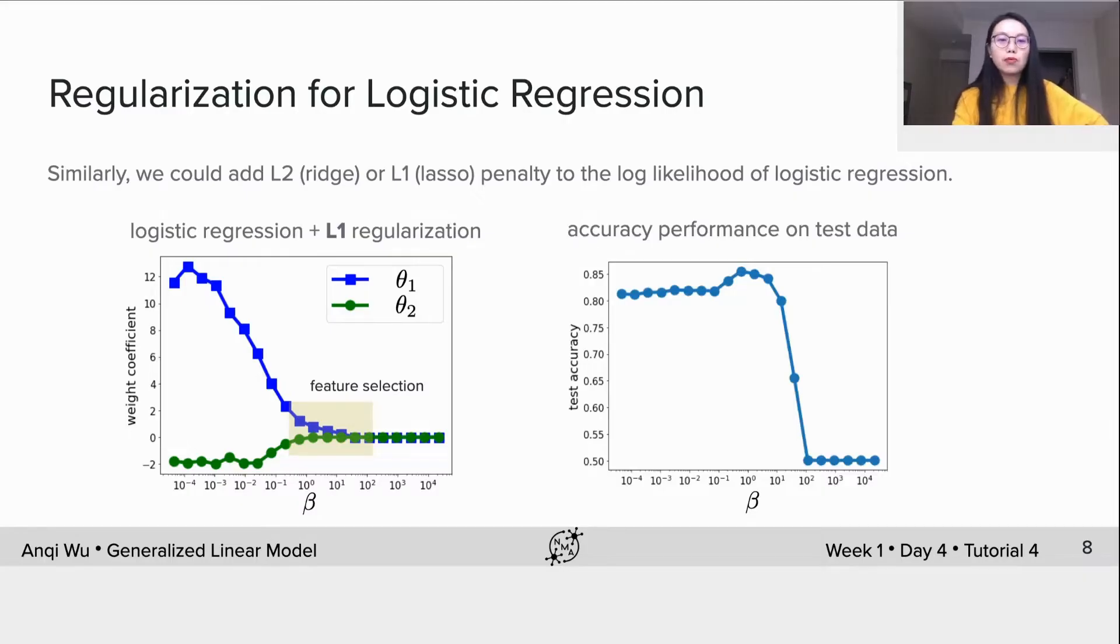We also plot the accuracy performance on the test data given different beta values. We can see the accuracy increases a bit, peaks at beta is around 0.8, and then decreases as beta continues increasing. Then the optimal theta1 and theta2 are picked when beta equals 0.8, where theta1 is about 1.5, and theta2 is 0. Therefore, this solution is sparse.